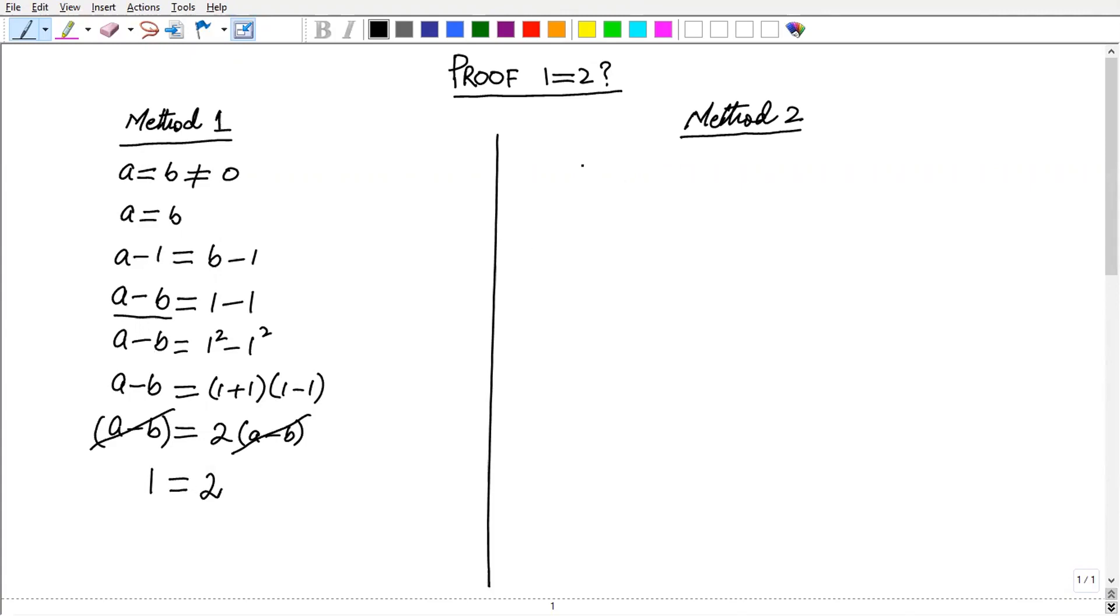Now method 2. We know that 1 can be written as 2 minus 1, minus 1, then we add plus 1 minus 1. There will be no change.